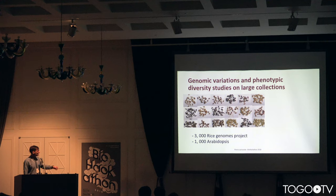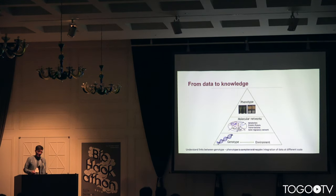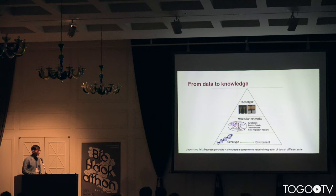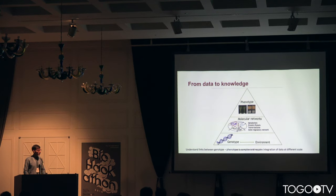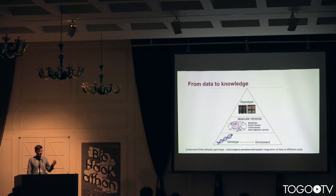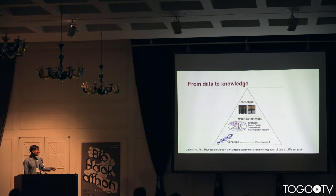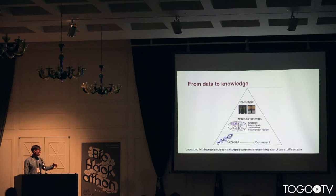Well-known in agronomy are the 3,000 rice genomes project and also the 1,000 genomes Arabidopsis project. However, the amount of data is hard to handle, and there are many layers of information between the genotypes and observed phenotypes, making it very difficult for biologists and even for statistical methods to infer the relation between genes and phenotypes. Understanding the links between genes and phenotypes is very complex and requires data integration at different scales.